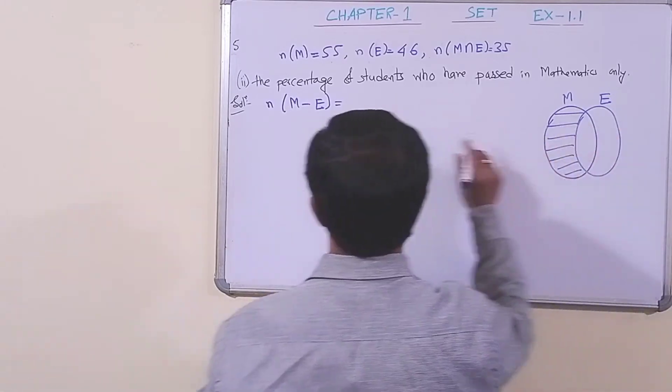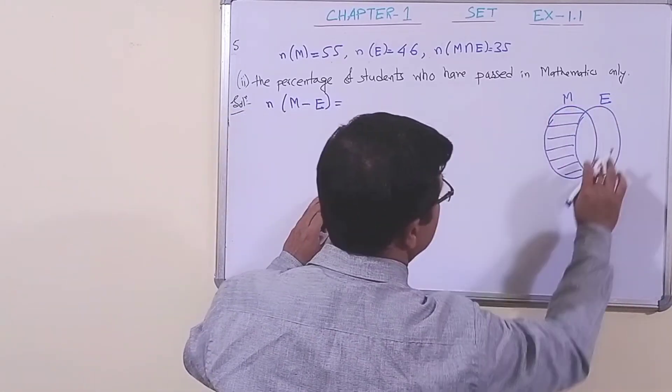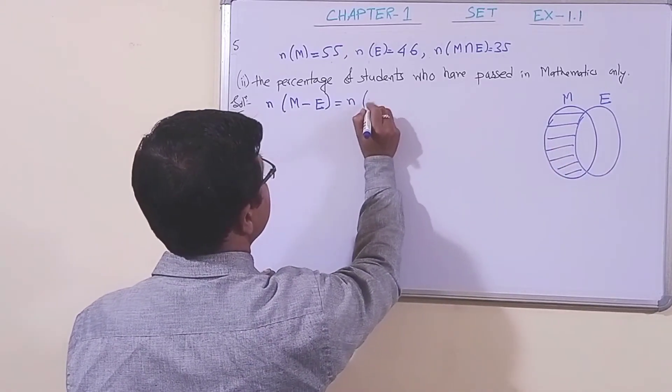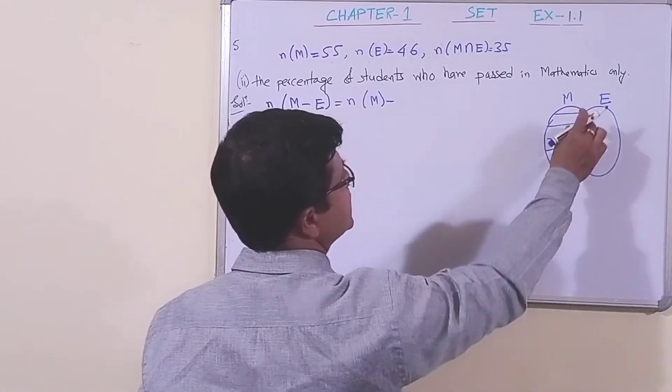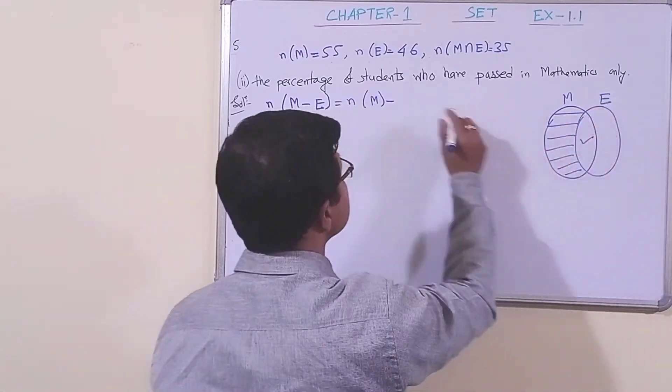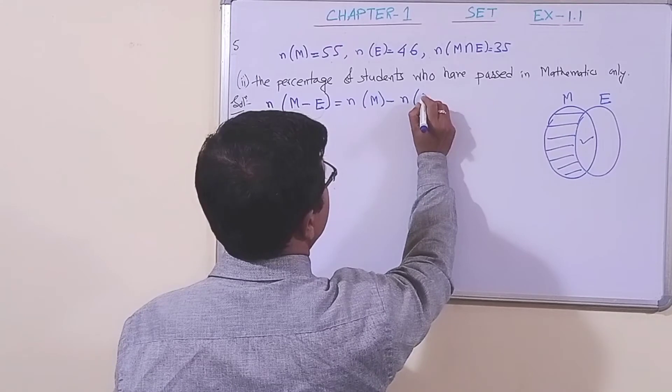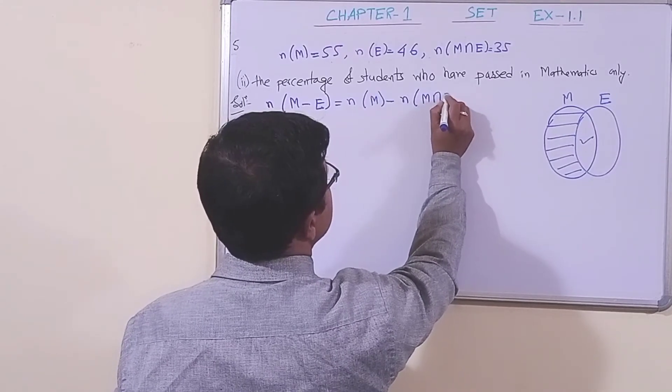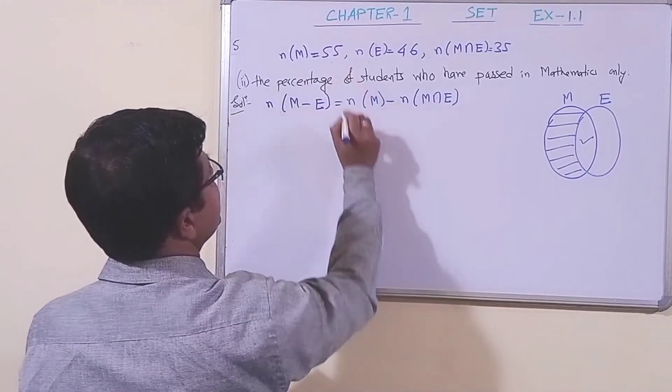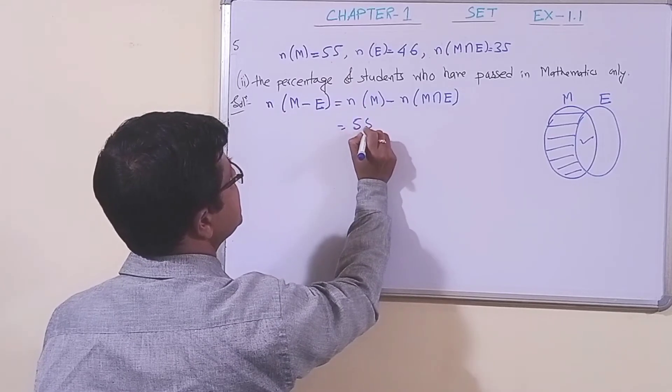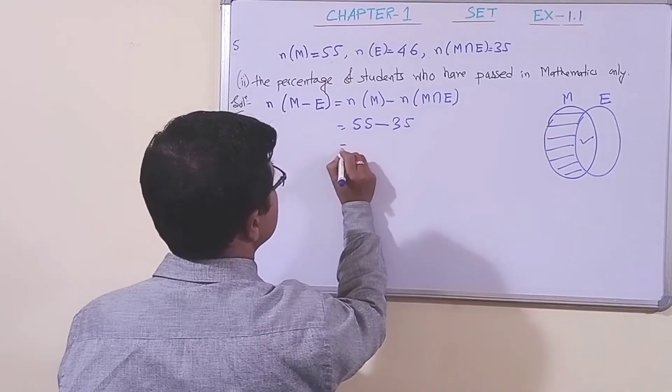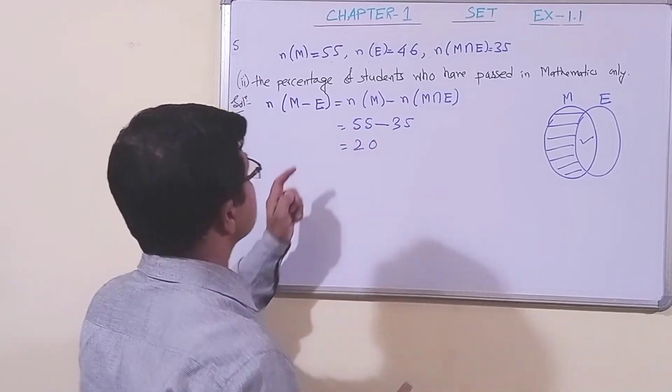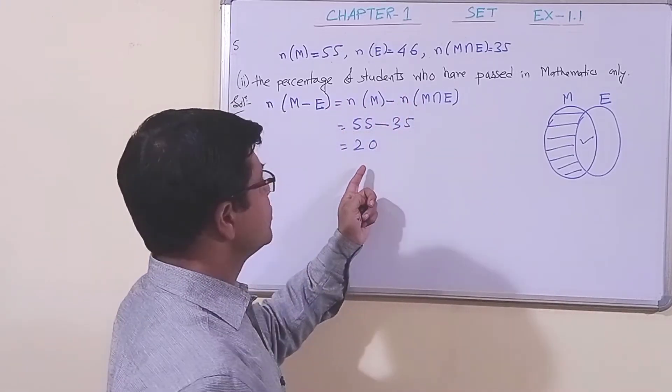Now, how can we represent just this part? From the whole set M, that is n(M), we have to remove the intersection part. This part is n(M∩E). Now, let us put the values. n(M) was given as 55, and n(M∩E) is 35. So, n(M-E) = 55 - 35 = 20. Therefore, the percentage of students who passed in mathematics only is 20 percent.